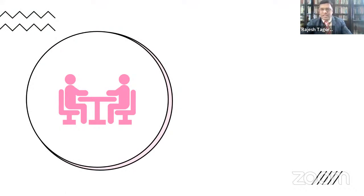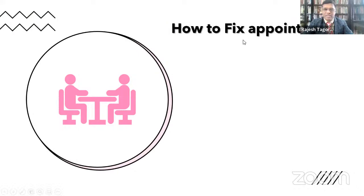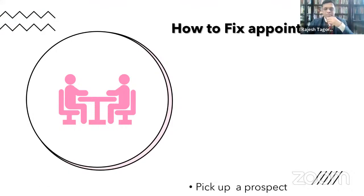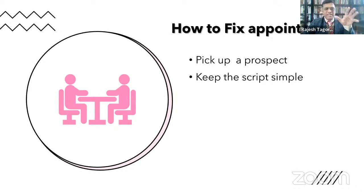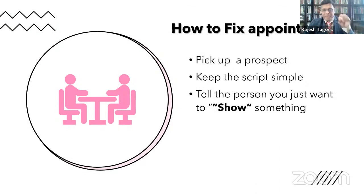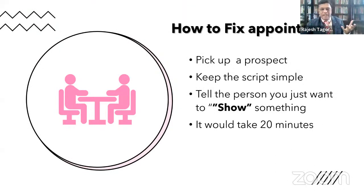We'll start today's session with the most relevant subject: how to fix up an appointment. To fix an appointment, all you need is a prospect or a lead, and keep the script simple. Tell the person you want to show them something — the Wealth Kit — and it takes around 20 to 30 minutes. It can be on a physical call or a video call.